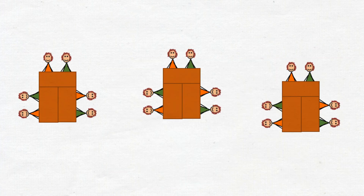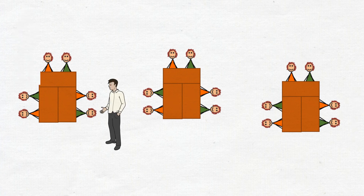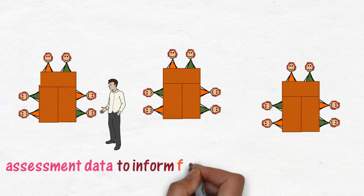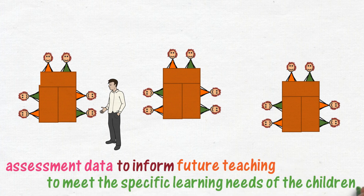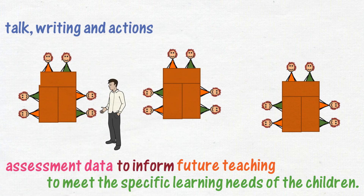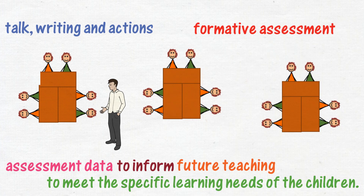Observing and questioning children as they investigate, listening as they explain their understanding to a friend, and collecting books at the end of each lesson all provide immediate assessment data, which can be used to inform future teaching to meet the specific learning needs of the children. The children's talk, writing and actions all display their current level of understanding. Thus, teaching and formative assessment are indivisible.